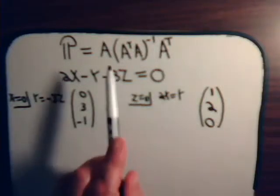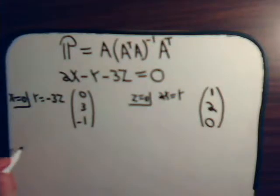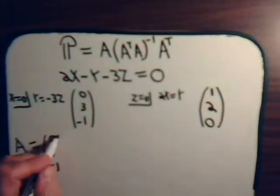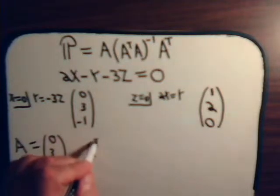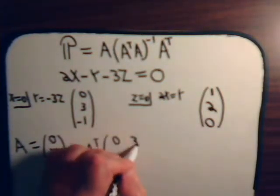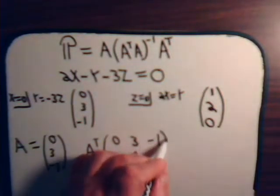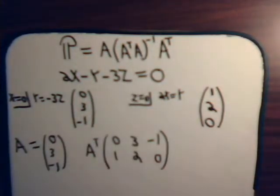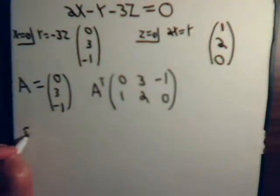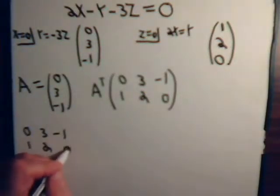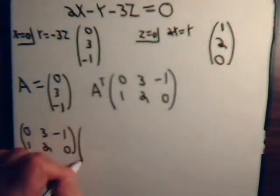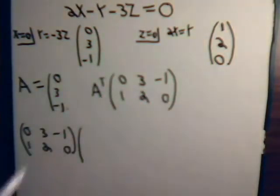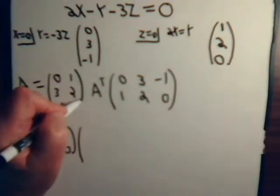Those two vectors are going to be the column vectors of matrix A. So matrix A is [0, 3, −1] and [1, 2, 0]. And A transpose has rows [0, 3, −1] and [1, 2, 0]. We included both column vectors of matrix A.